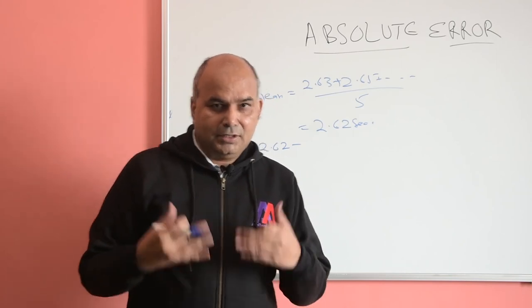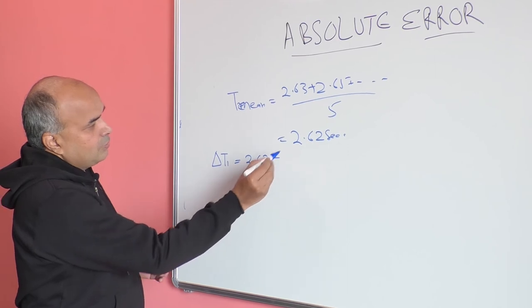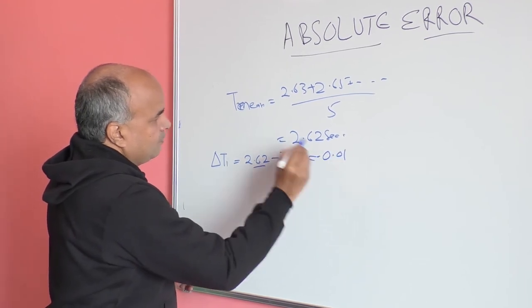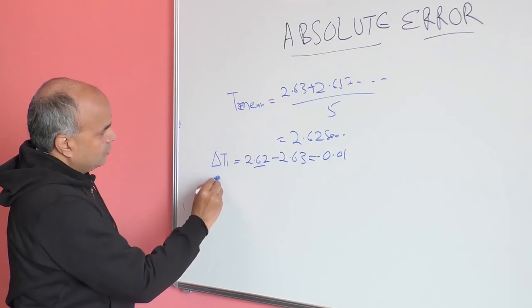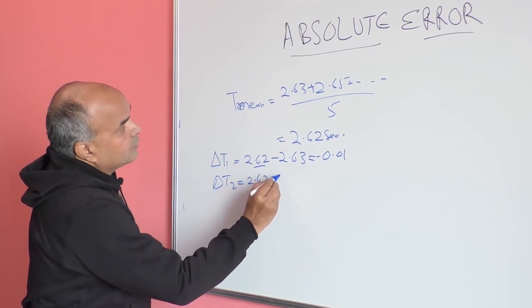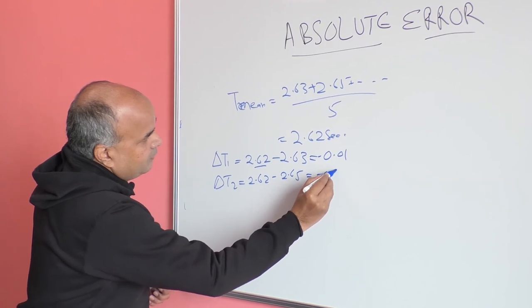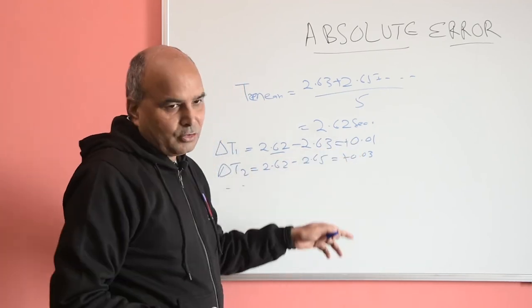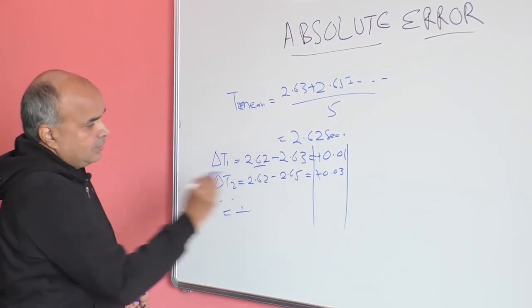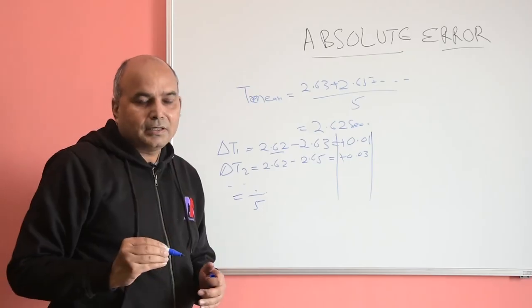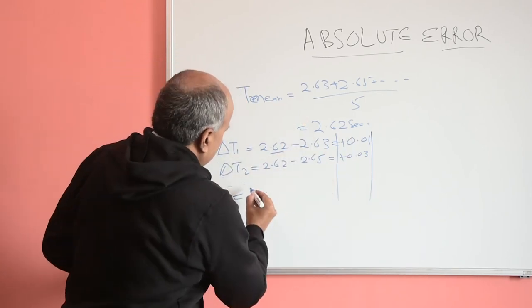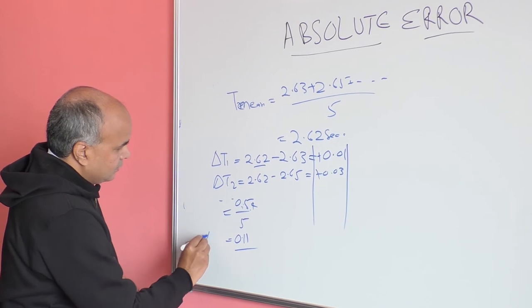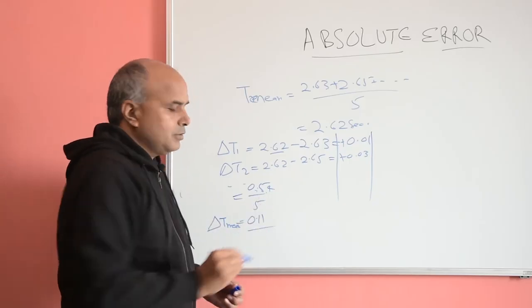Now let us calculate the absolute error for each measurement by subtracting the mean from each reading. After computing all differences and removing negative signs, the sum of absolute errors is 0.54. Dividing by 5 gives the mean absolute error = 0.54 / 5 = 0.11 seconds.